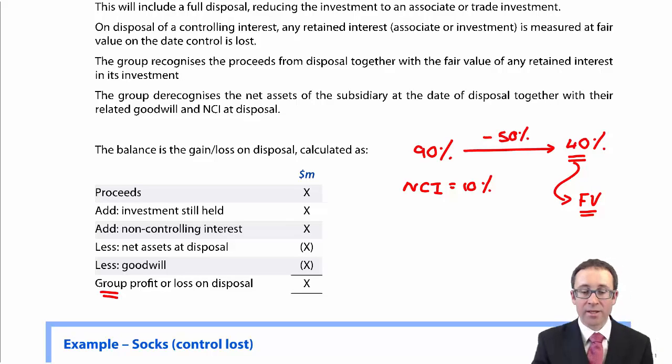We need to calculate a group profit or loss on disposal based on substance. Legally, the parent is disposing of shares. So there could be an individual company profit or loss on disposal. But in substance, we are disposing of a subsidiary from the group. So what we do is we take our proceeds.